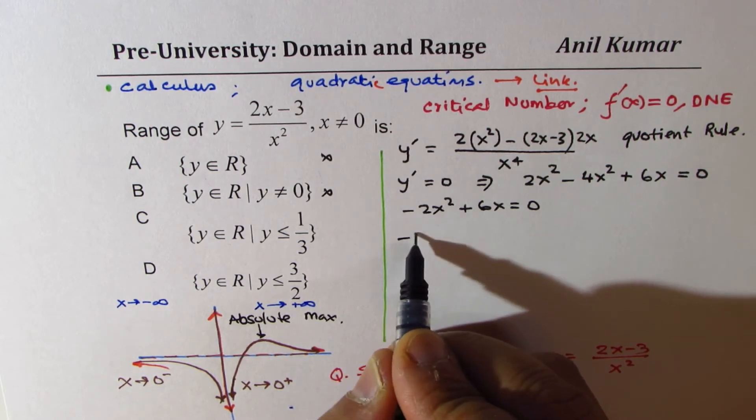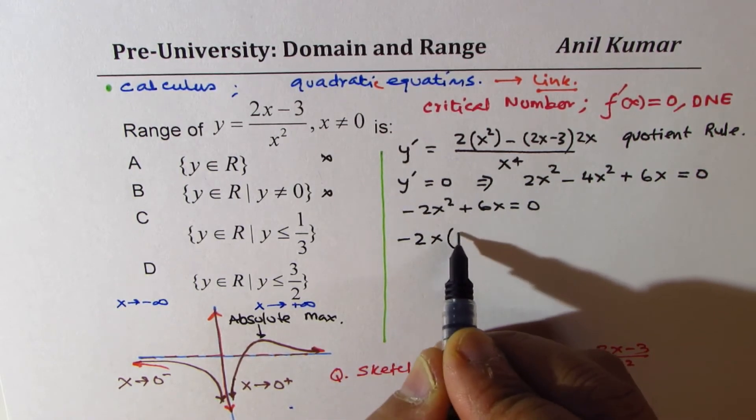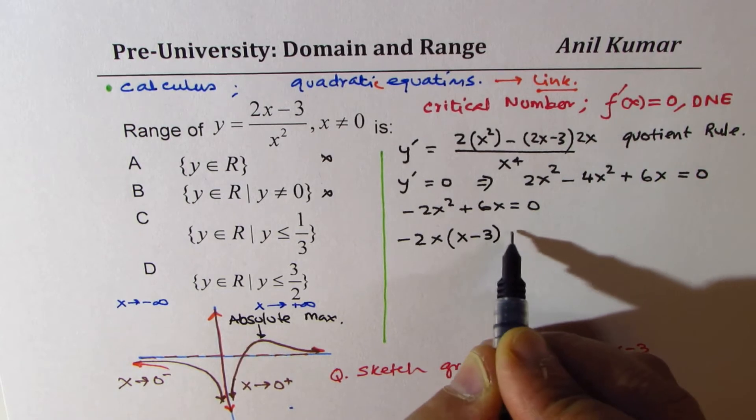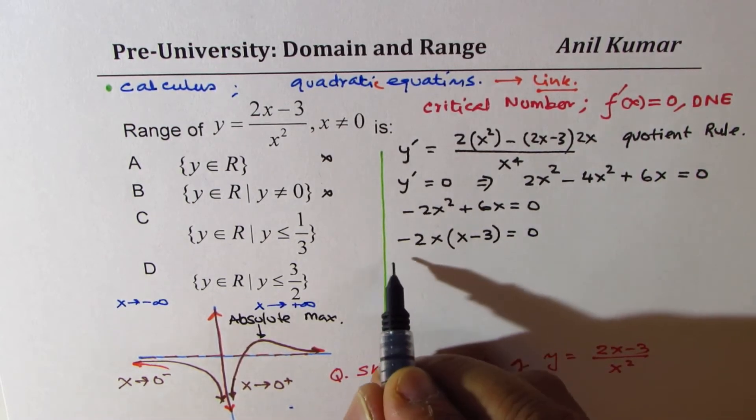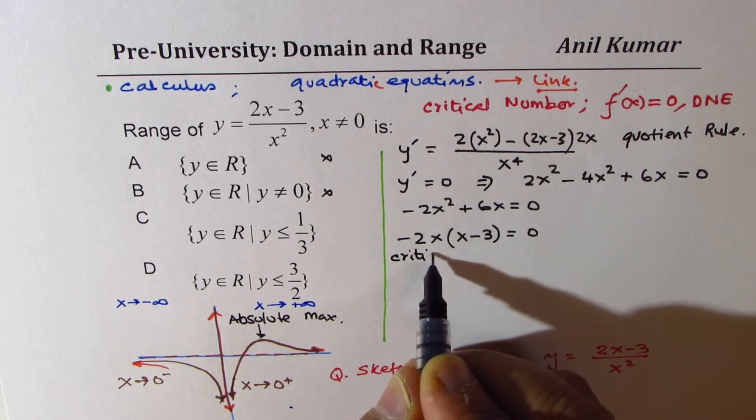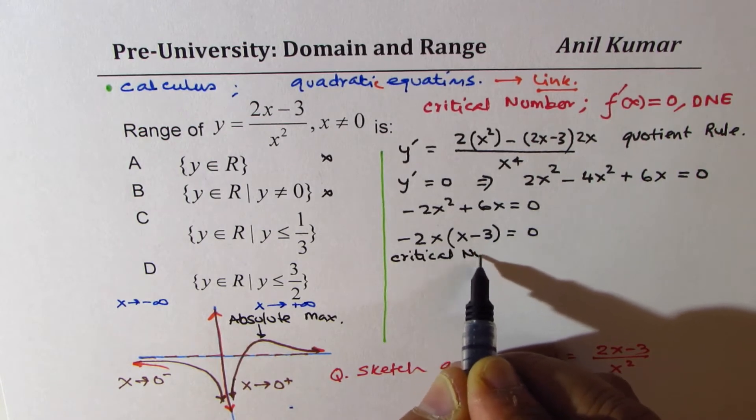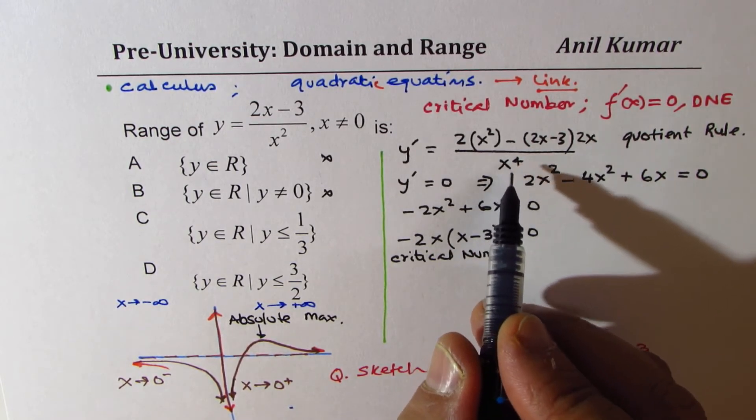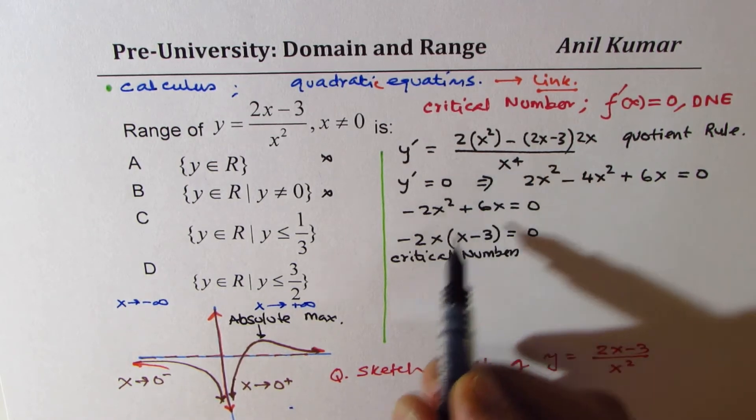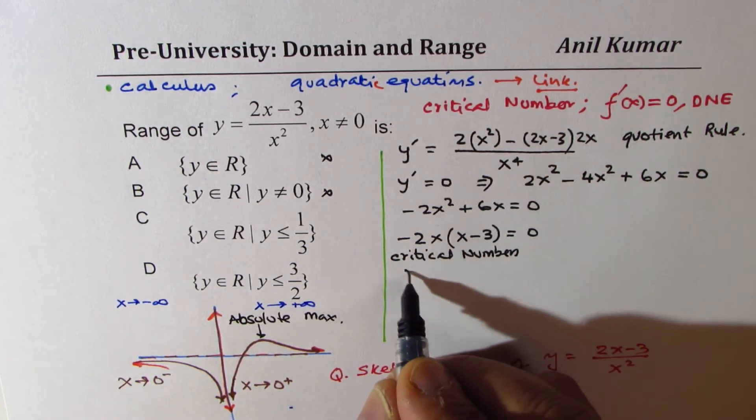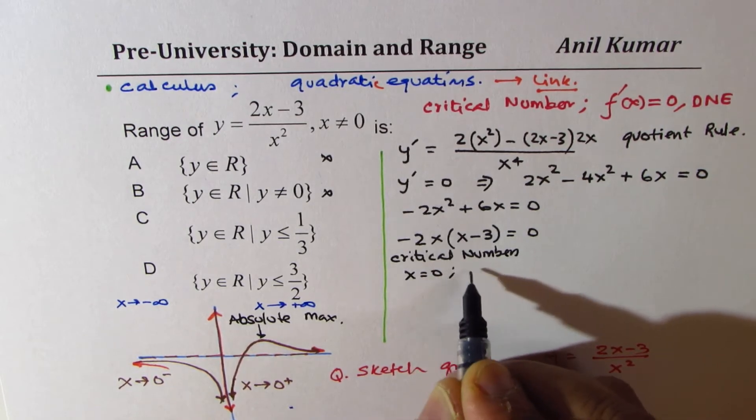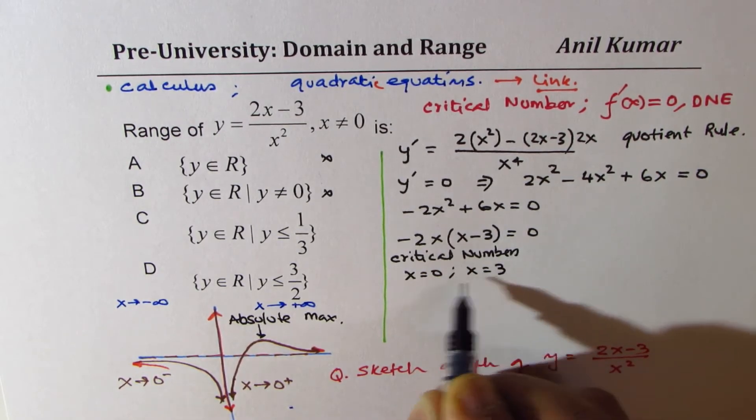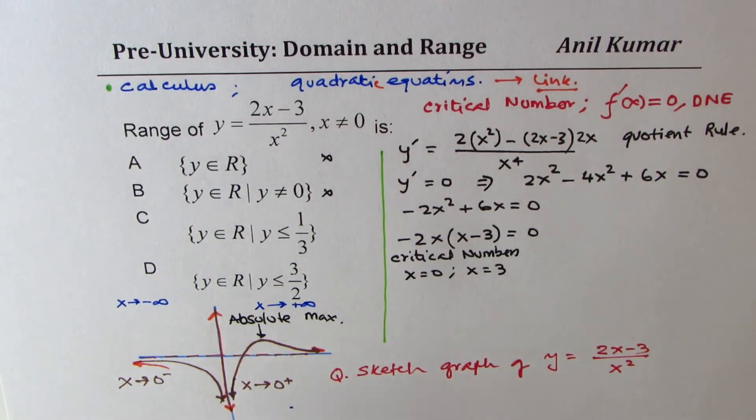We have minus 2x square plus 6x equals to 0. Taking minus 2x common, I get x minus 3 equals to 0. So we get two critical numbers. Our critical numbers are, well, x equals to 0 is also a critical number, since that does not exist. But from here also, we get x equals to 0 and x equals to 3. So these are the two critical numbers.